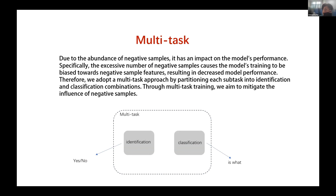Our multi-task learning approach introduces a multi-task framework. Instead of treating entity recognition as a single task, we split it into two subtasks: named entity identification and named entity classification, then jointly train them. Specifically, identification is a binary task — it judges yes or no — and classification assigns the specific entity type to the current span.